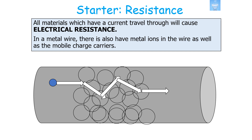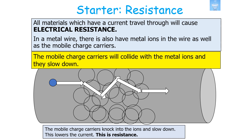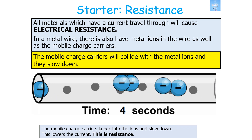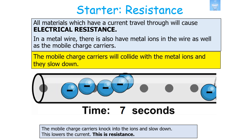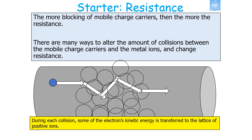In reality, all materials which have a current travelling through them will have an electrical resistance. In a metal wire there are metal ions as well as the mobile charge carriers — the electrons. The mobile charge carriers collide with the metal ions and slow down, which lowers the current, and this is what resistance is. The more blocking of those mobile charge carriers, the greater the resistance.